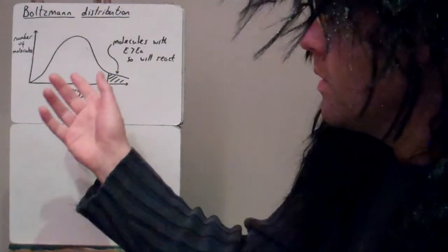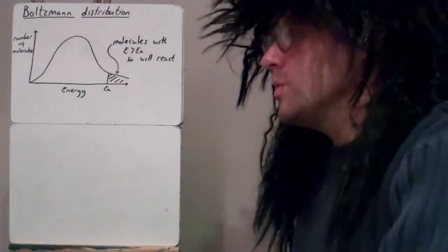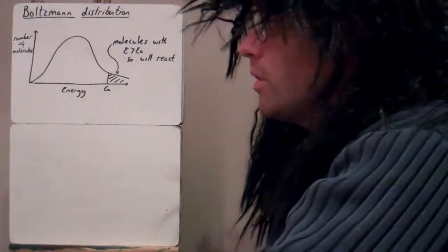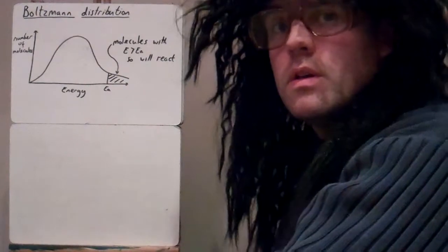For example, if we have a look here at this graph, this is what a Boltzmann distribution looks like. Along the y-axis you have a number of molecules, along the x is the energy of those molecules.